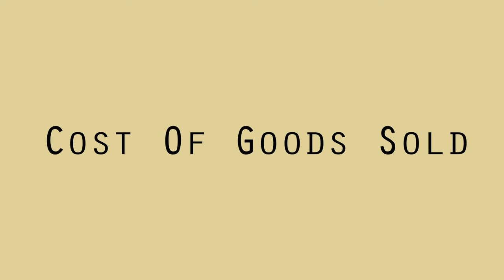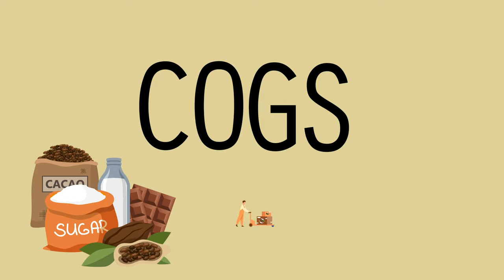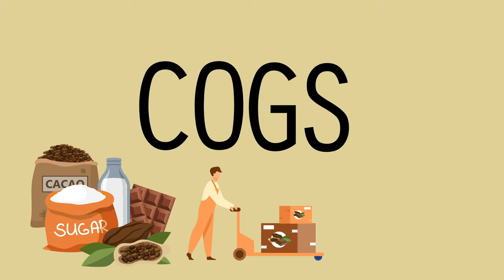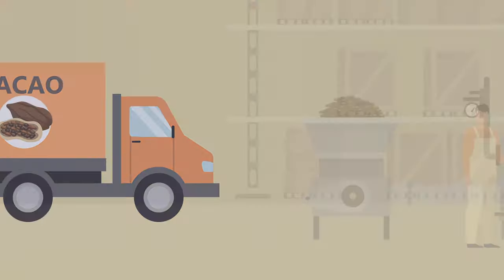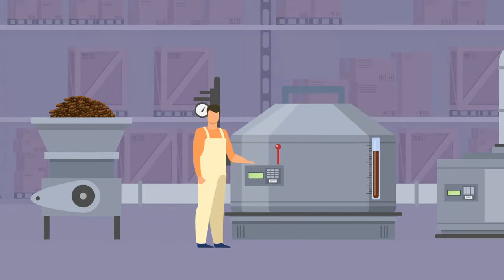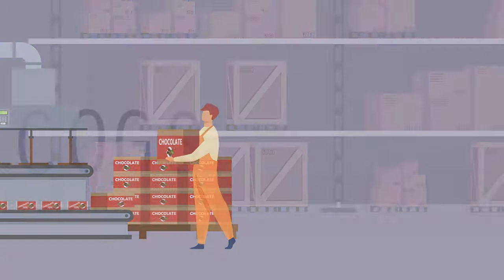Cost of goods sold, commonly referred to as COGS, are the expenses directly associated with producing a product, such as the cost and transportation of raw materials, labor needed to manufacture the goods, and storage fees.